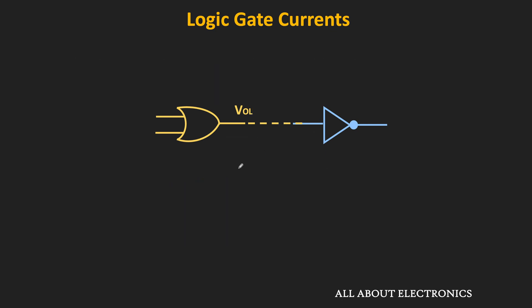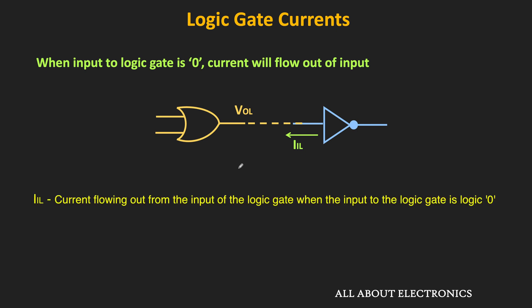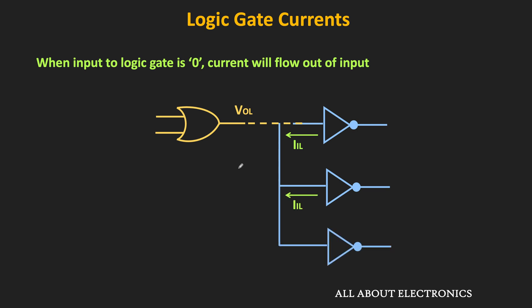Similarly, when the input to the logic gate is 0, then the current will flow out of the input pin. Each logic gate is powered by some supply voltage, so when the input to the logic gate is 0, from the supply voltage some current will flow towards the input node, and this current is known as IIL — that is the input current of the logic gate when the input is low. If more than one logic gate is connected at the output side, then from each gate this IIL current will flow towards the output node, and the summation of all these currents will be the sink current for the preceding stage — in this case, the IOL current for the OR gate.